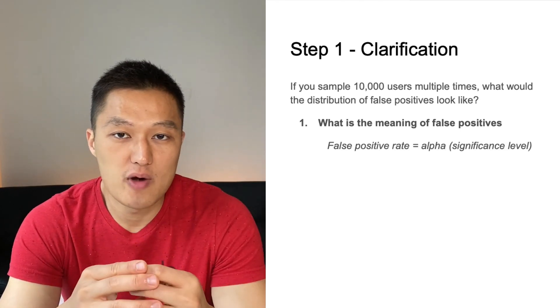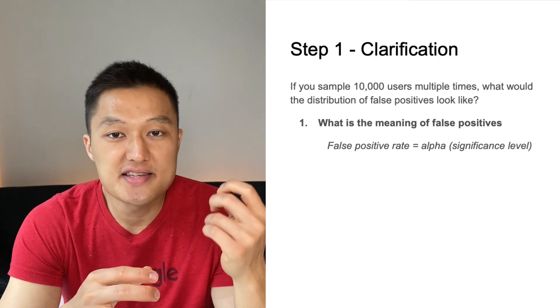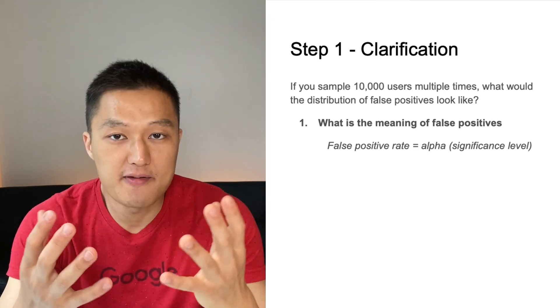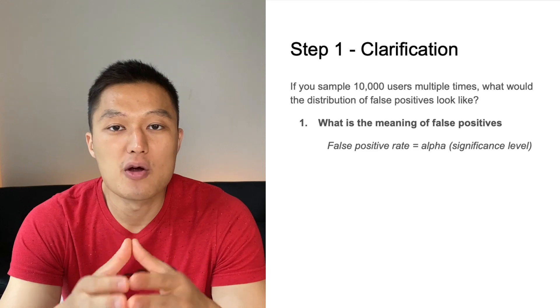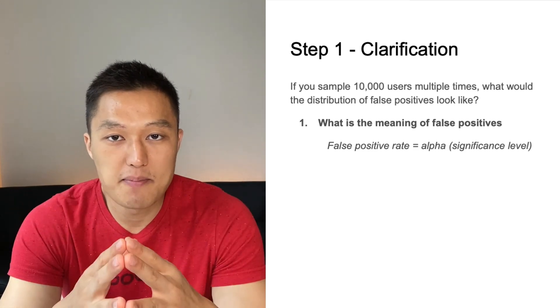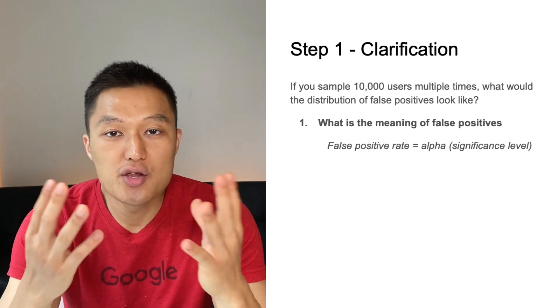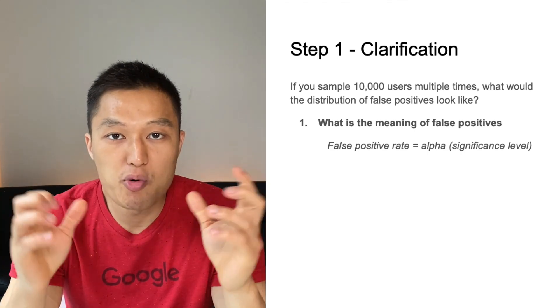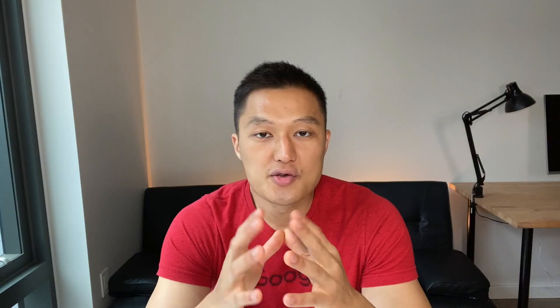First, understand what false positives mean in the context of statistical testing. You commit a false positive if you reject the null hypothesis when it is actually true. This is called the false positive rate, or type 1 error rate, which equals your alpha or significance level. If you set alpha at 5% (0.05), your false positive rate is also 0.05.